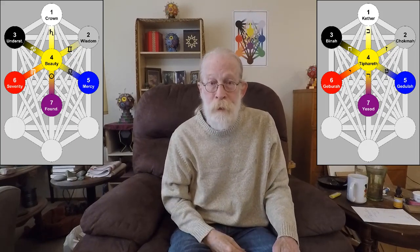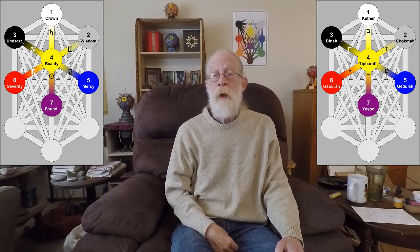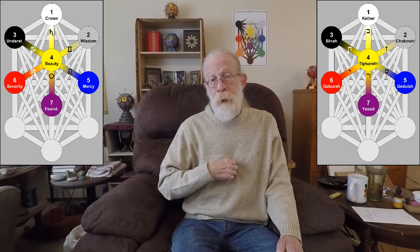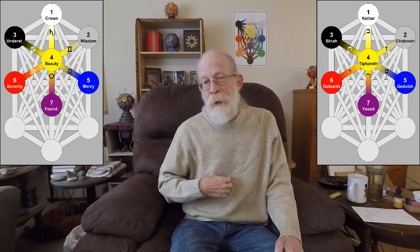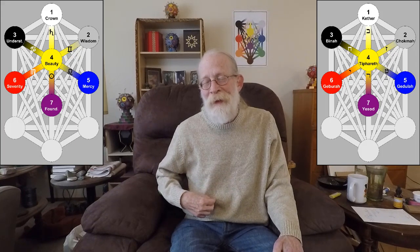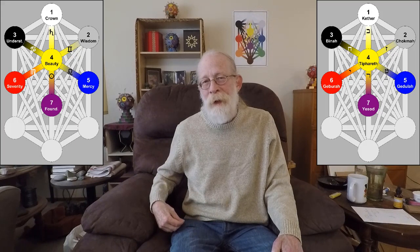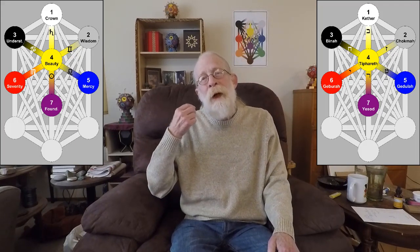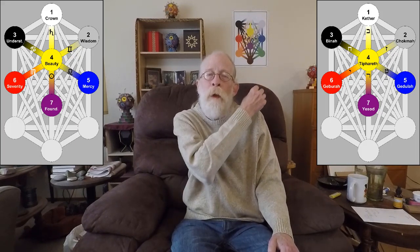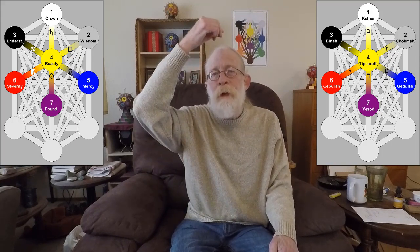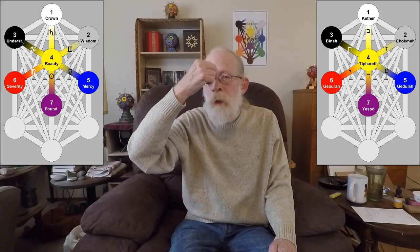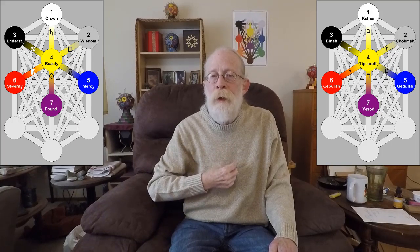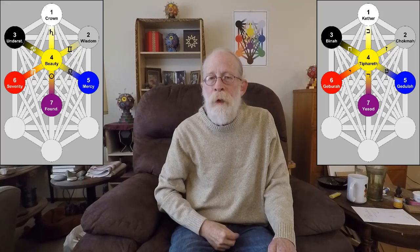Now we do the reverse, starting in Yesod. We pass up the path of Resh to Tiferet, then down the path of Yod/Virgo into Geburah and back, then down into Gedulah and back, then the path to Binah and back, then the path to Chokmah and back, then the path to Kether — and then we come all the way back down Saturn to Tiferet and continue down Resh until we return to Yesod.